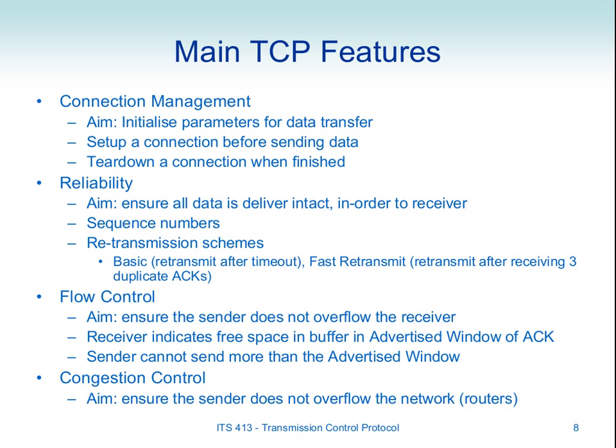We've gone through TCP flow control in last week's lecture. TCP has a reliability mechanism where we send data, expect to receive an ACK back, and if we don't, we retransmit. There are details about when to retransmit: basic and fast retransmit. The three main features of TCP are the reliability mechanism, flow control — which ensures we do not overflow the receiver — and congestion control, which is about making sure we do not overflow the network.